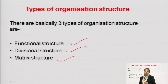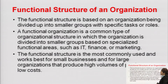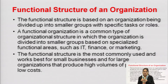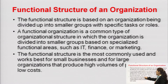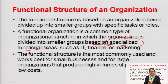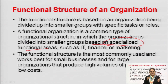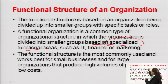There are three types of organization structure: functional, divisional, and matrix. The functional structure is based on the organization being divided into smaller groups with specific tasks or roles. A functional organization is a common type of organizational structure in which the organization is divided into smaller groups based on specialized functional areas — for example, departments based on marketing, HR, and finance. That is called the functional structure of an organization.